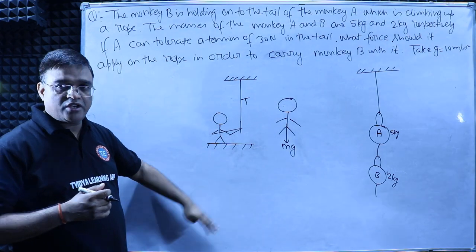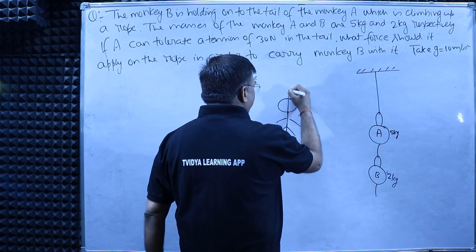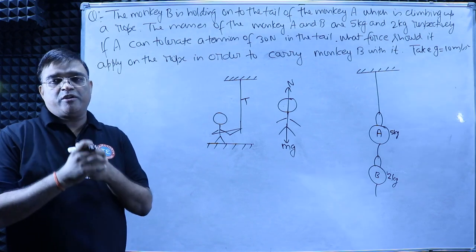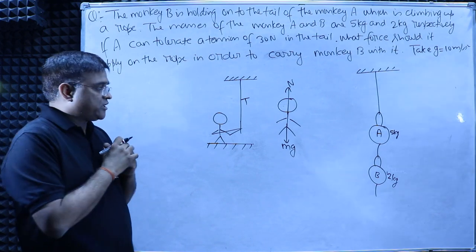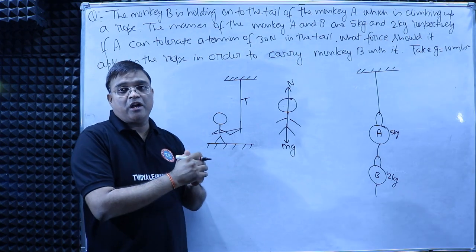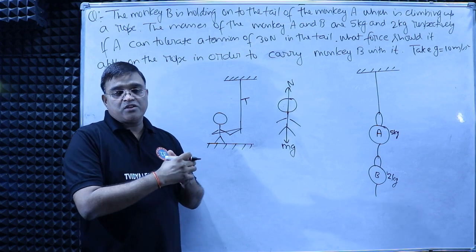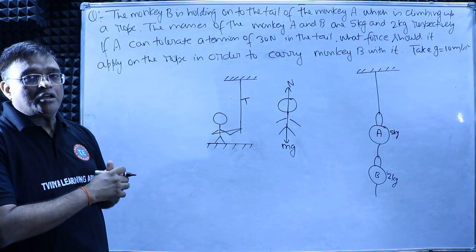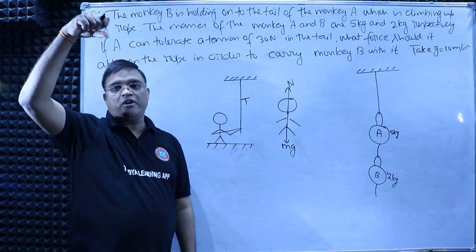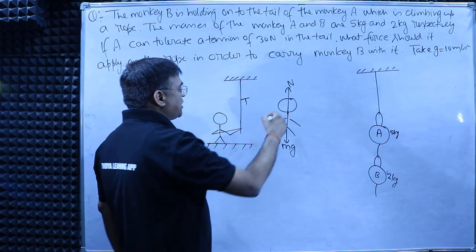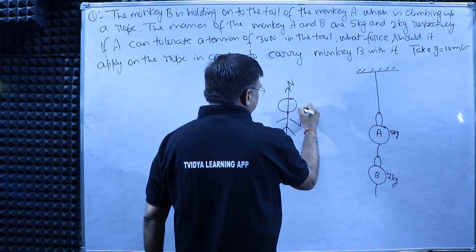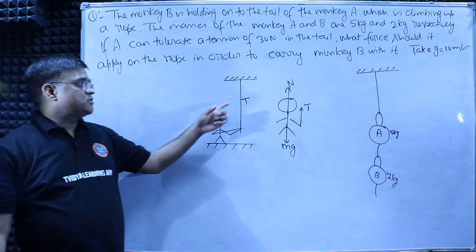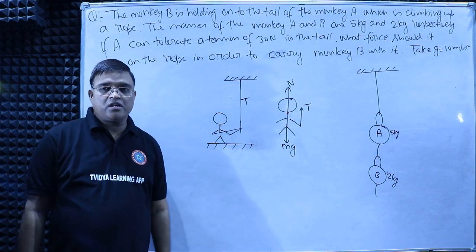Now, you will have motion in the upward direction. As per Newton's third law, you pull the rope in the downward direction, so the rope is going to pull you in the upward direction. The tension will therefore act in the upward direction on you.